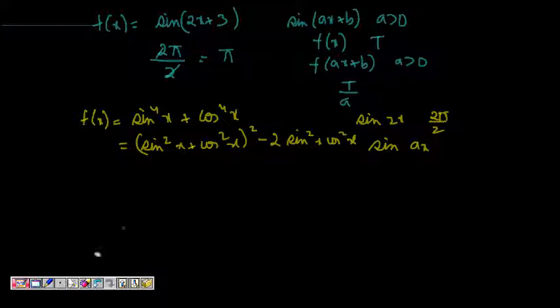Isn't it? So now this becomes, sine squared x plus cos squared x is 1, so this is 1 squared minus, and still sine squared x and cos squared x, we want some simple power 1 terms. So I can write half into 2 sine x cos x and again 2 sine x cos x.